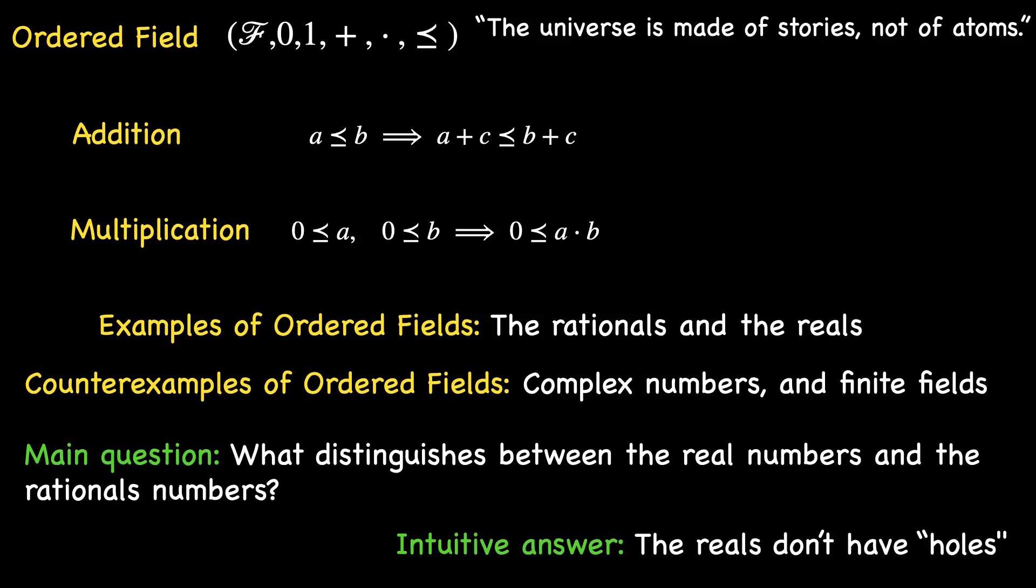Conversely, real numbers originate in the domain of distances, crafted to grapple with spatial measures. The inadequacy of rational numbers in fully capturing the nuances of distances becomes evident when encountering gaps, exemplified by the challenge posed by the square root of 2.